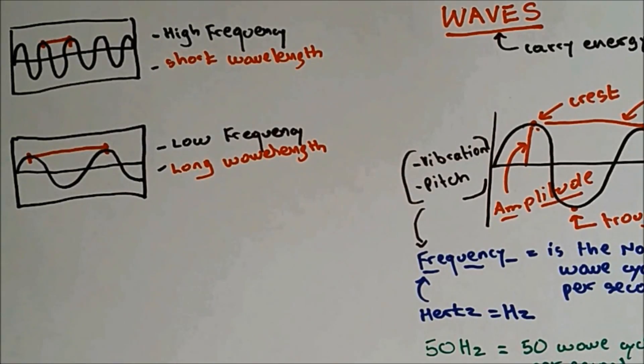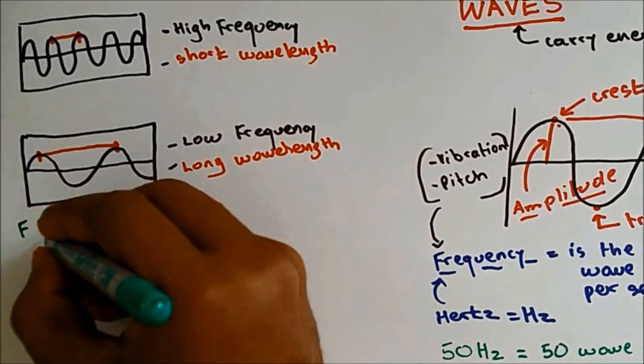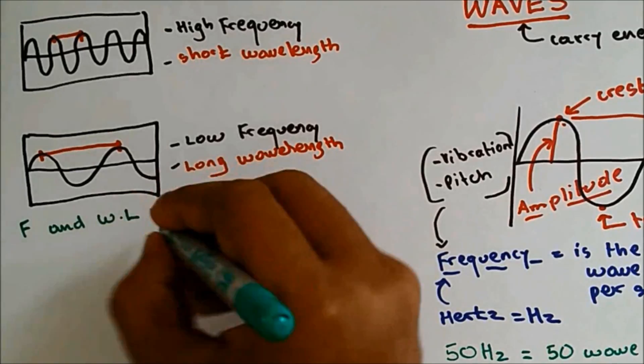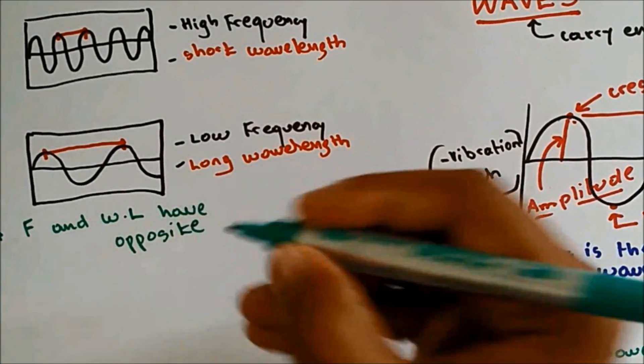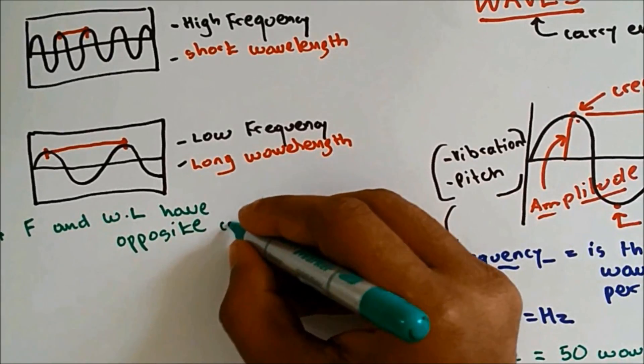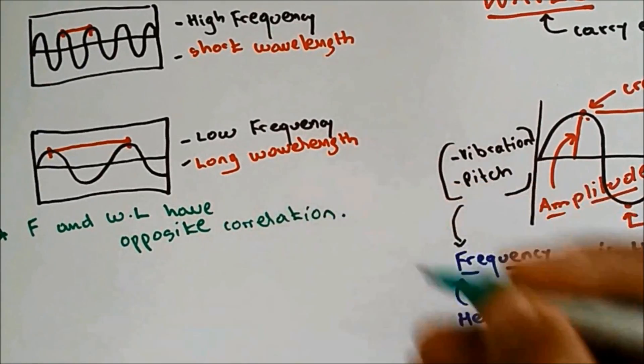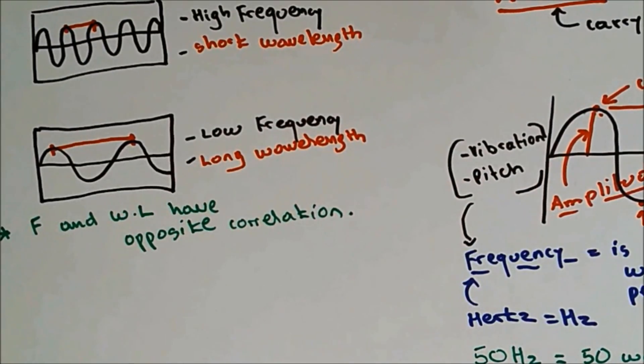From this diagram, we can conclude that frequency and wavelength have opposite relationship, or we could call it correlation, or we could call it negative correlation.